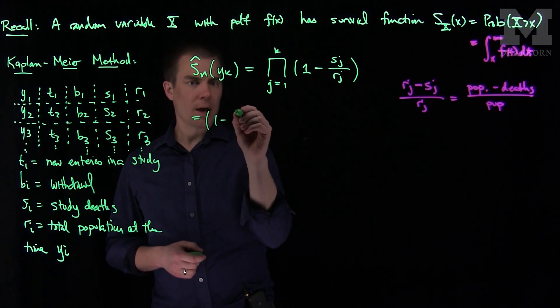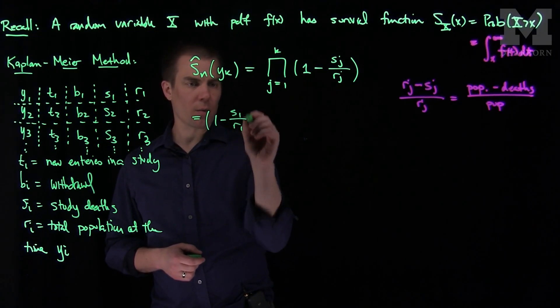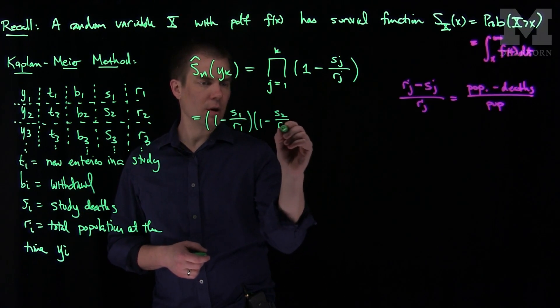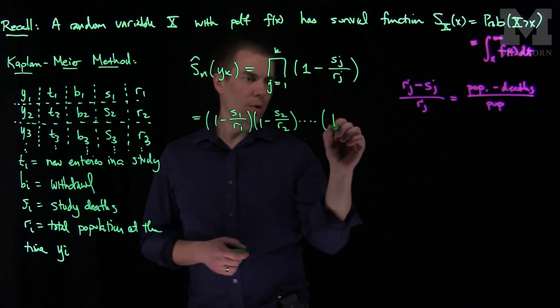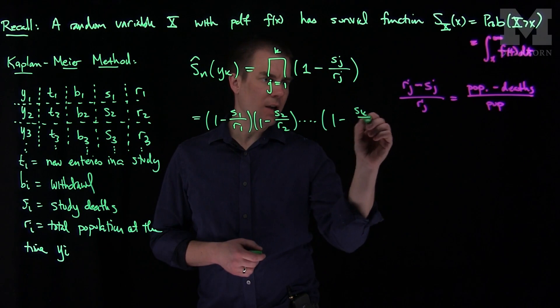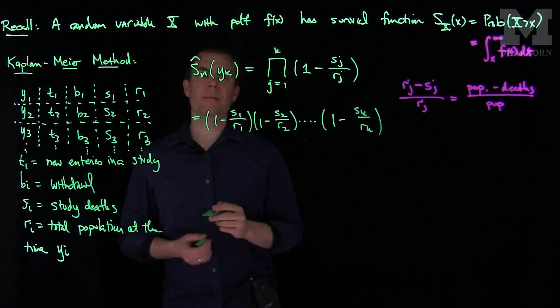So this is one estimate of the survival function. And what we can notice is the structure has the form: (1 - s1/r1)(1 - s2/r2)...(1 - sk/rk). So that's one method.